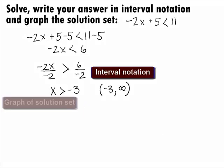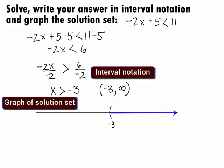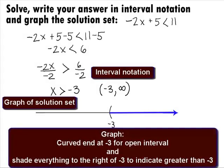Last, we need to graph this. The graph will look like the interval notation. We will have an open circle at -3, and to show everything greater than -3, we will shade in everything to the right of -3 for our final answer for the graph.